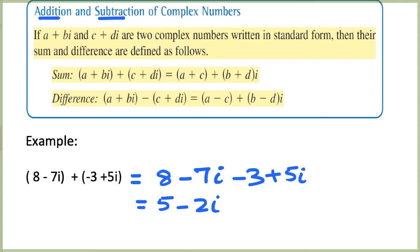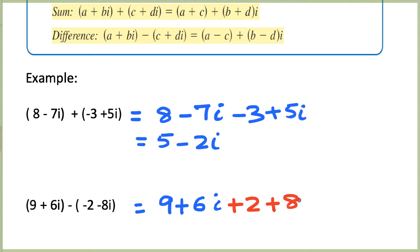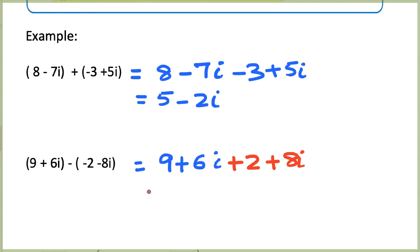Now let's look at another example: (9 plus 6i) minus (negative 2 minus 8i). The first thing to do is distribute the minus sign inside the second expression. So we get 9 plus 6i, and taking the minus inside gives plus 2 plus 8i. Now we add the like terms: 9 plus 2 is 11, and 6i plus 8i is 14i. The result is 11 plus 14i.